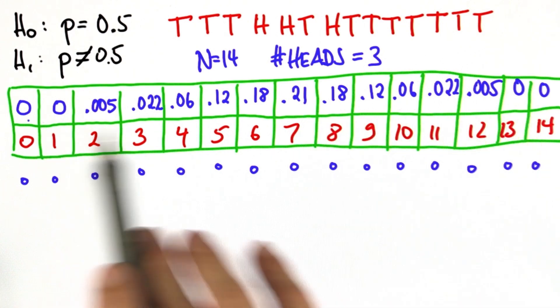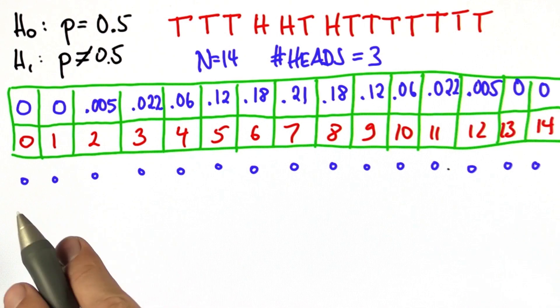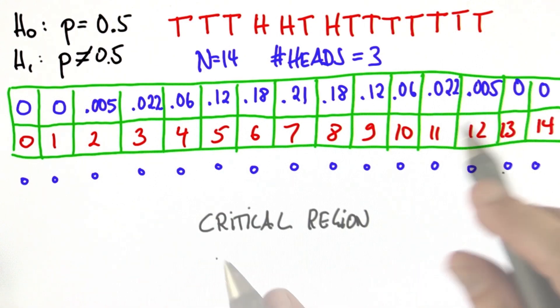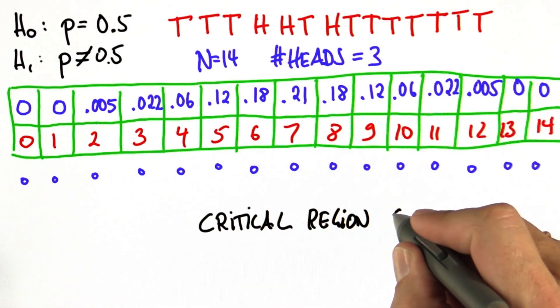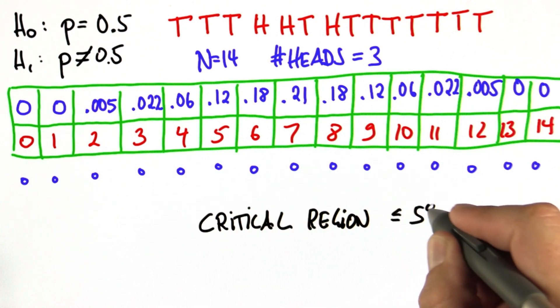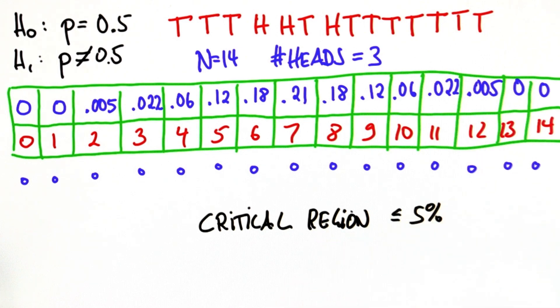And then it goes down exactly the way it went up over here. I've also added checkboxes. I want you to check exactly those that define the critical region. So the total probability in the critical region does not exceed 5%. And remember, this is a two-tailed test.